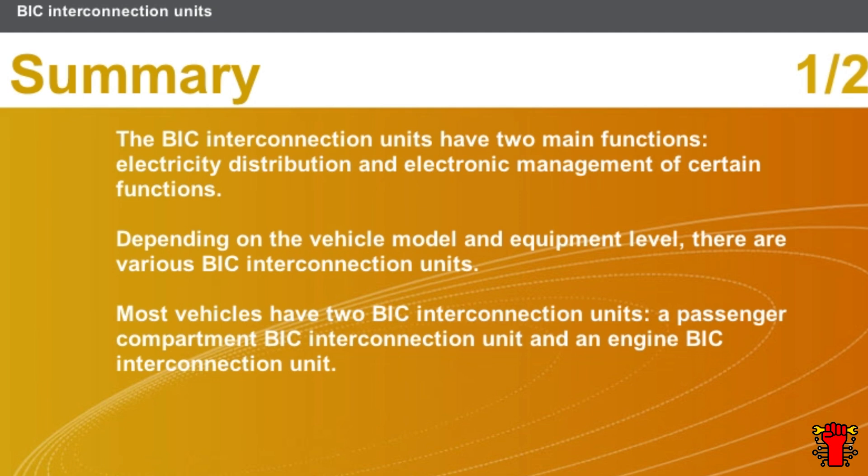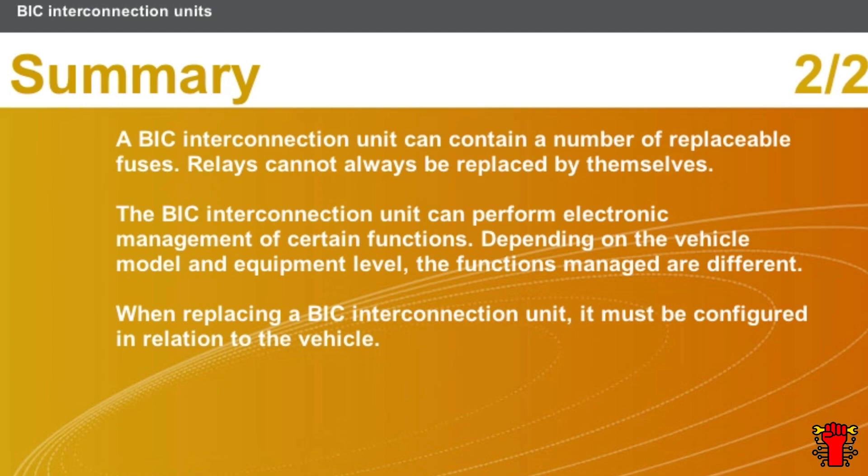The BIC interconnection units have two main functions: electricity distribution and electronic management of certain functions. Depending on the vehicle model and equipment level, there are various BIC interconnection units. Most vehicles have two BIC interconnection units: a passenger compartment BIC interconnection unit and an engine BIC interconnection unit. A BIC interconnection unit can contain a number of replaceable fuses, and relays cannot always be replaced by themselves.